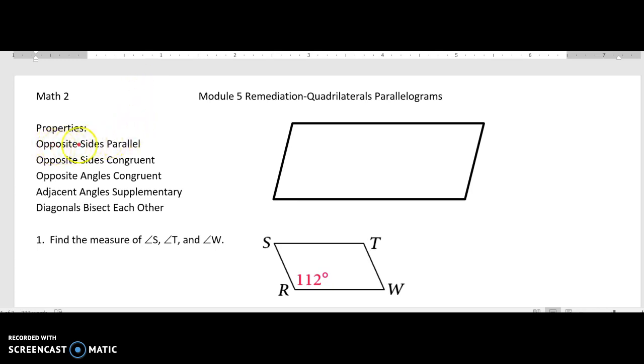First one is that opposite sides are parallel. So I can mark this with arrows saying these sides are parallel, and I can mark here with two arrows saying that these are parallel. We also know opposite sides are congruent. So right away, I know that is congruent to that. Then in addition, I know this is congruent to this.